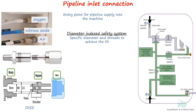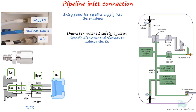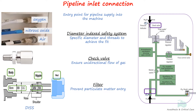Two concentric bores, BB and CC, on the body fit into two shoulders, MM and NN, on the nipple. Only when these parts align can the threads of the nut and body engage securely. The inlet connection is fitted with a check valve — like the high-pressure cylinder system — to prevent reverse flow of gas from the machine to the pipeline system. The pipeline also has filters of 100 micrometers to filter the gas.